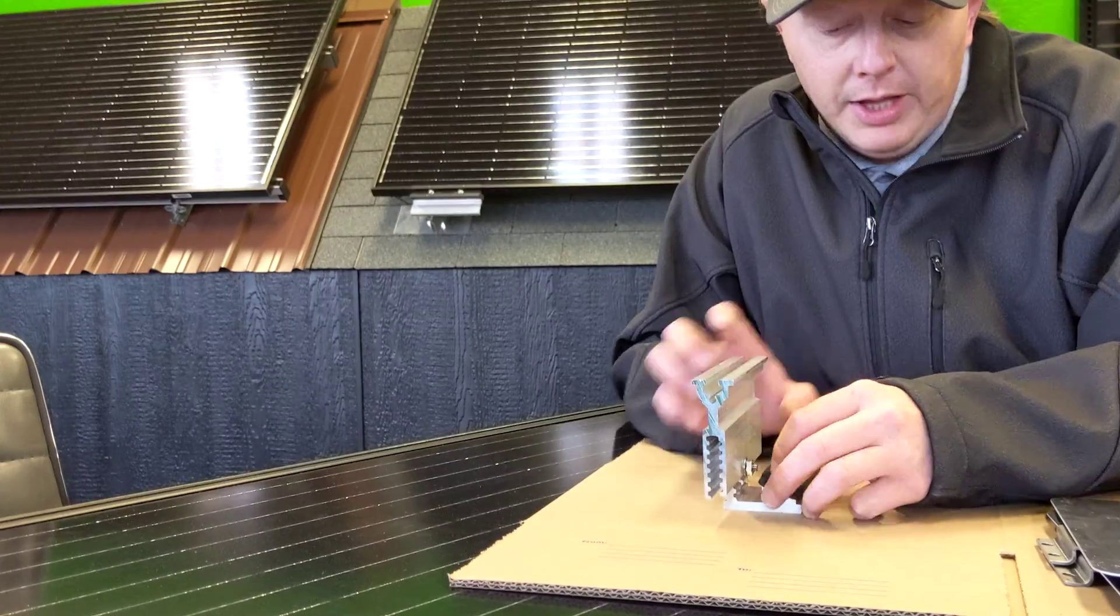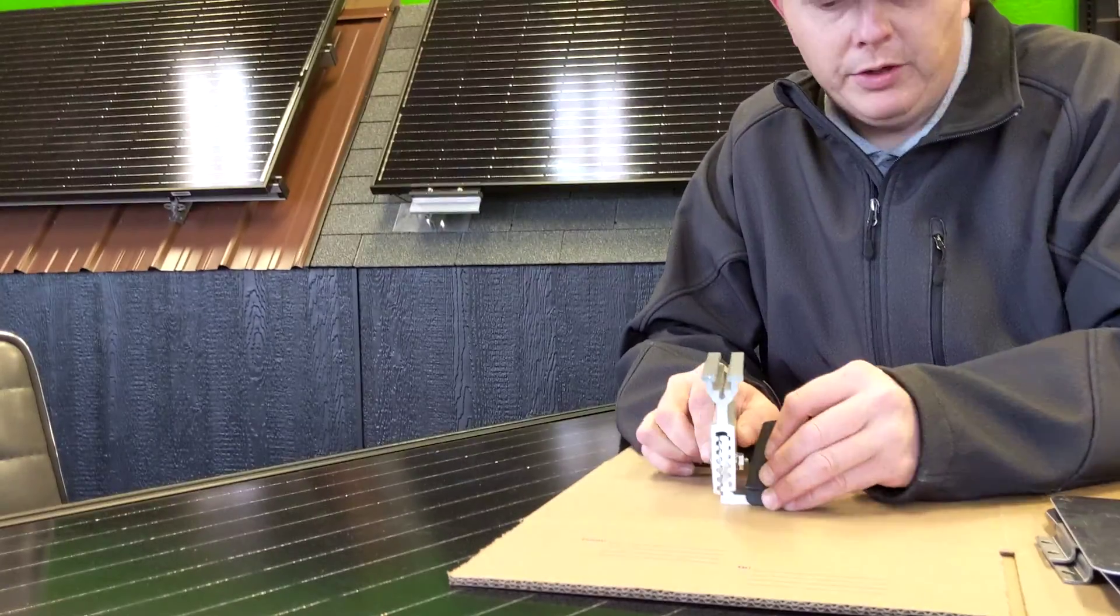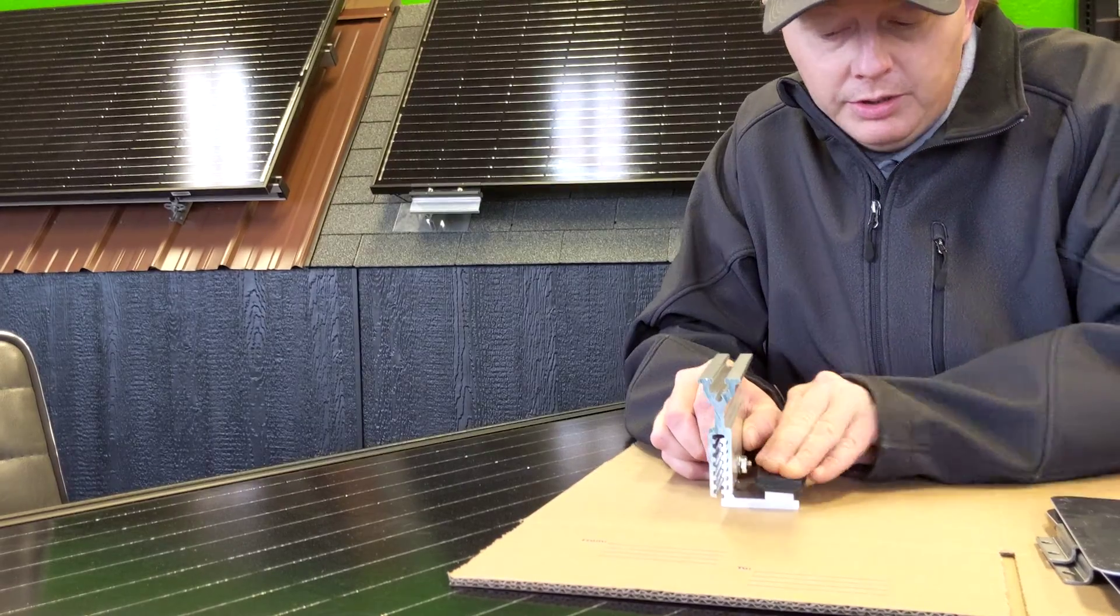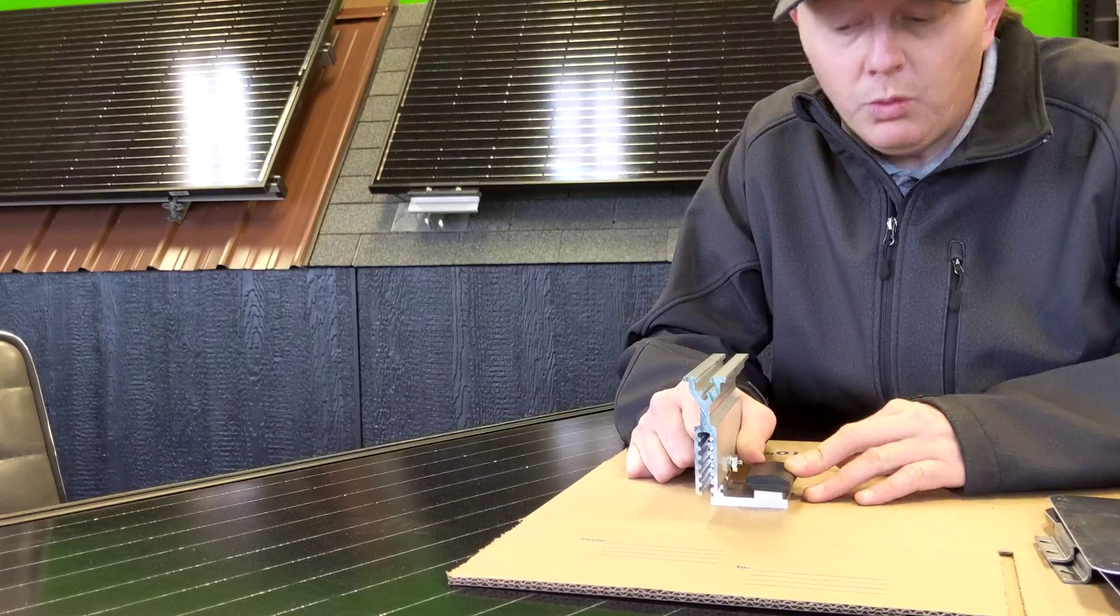This is just a rubber cap. It's already a countersunk bolt, but just for weather, because that would be your contact point on the roof. That's just another added layer of weatherproofing so water can't get down in there.